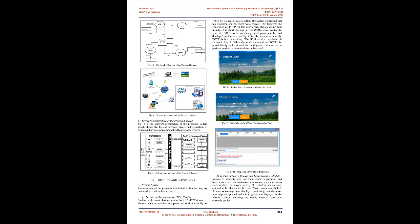System Testing: The accuracy of the program was tested with varying data. For two-factor authentication (2FA) testing, a student with matriculation number 165457231 entered his matriculation number and password as shown in FIG 6. When he clicked the login button, the system confirmed his username and password were correct. This triggered generation of a TOTP for this user which elapses within 4 minutes. The SMS server routed the generated TOTP to the user's registered phone number and displayed another screen (FIG 7) for the student to enter the TOTP. The SMS service dashboard is shown in FIG 8. When the student entered the TOTP, the portal authenticated him and granted access to perform student basic operations.